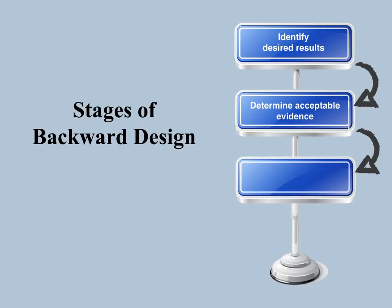The second step of the model is to determine what you will gather from your students as acceptable evidence. It will be very important to make sure that when determining what this evidence will look like, you choose evidence that will align with step one, which is your desired results. Finally, the last step in the model is to plan the learning experiences and instruction of the course or unit. Your goal in this step is to make the instruction and learning experiences engaging and effective for all students.